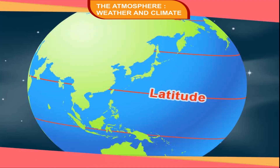Latitude. The angle of incidence of sun rays is not the same everywhere due to the spherical shape of the earth. The angle of incidence is high on and around the equator and decreases towards the poles. This is the reason why places near the equator have a high temperature, and as we go towards the poles the temperature goes on decreasing. As we move away from the equator, the sun's rays become increasingly slanted, which spreads the heat over a larger area.